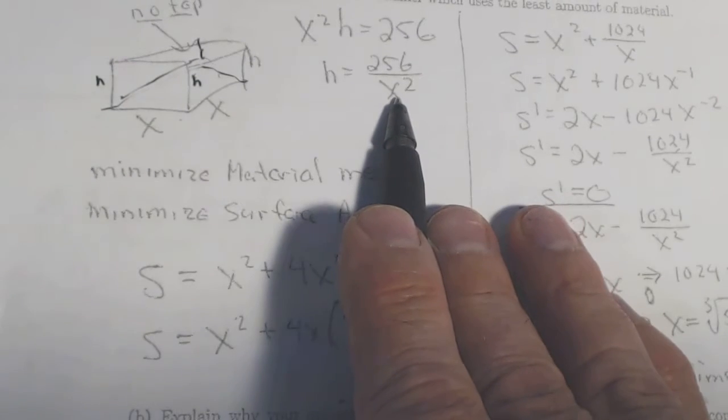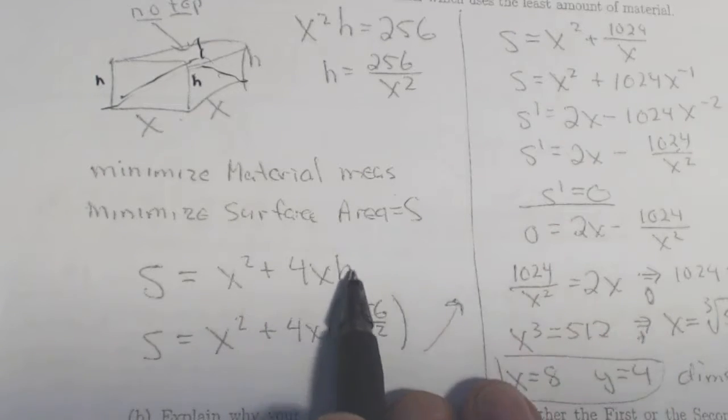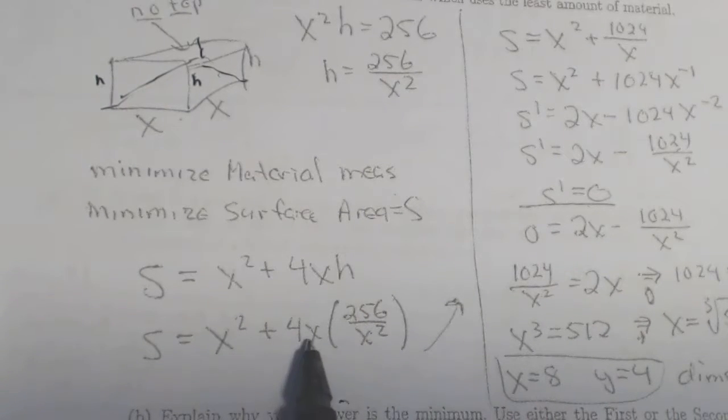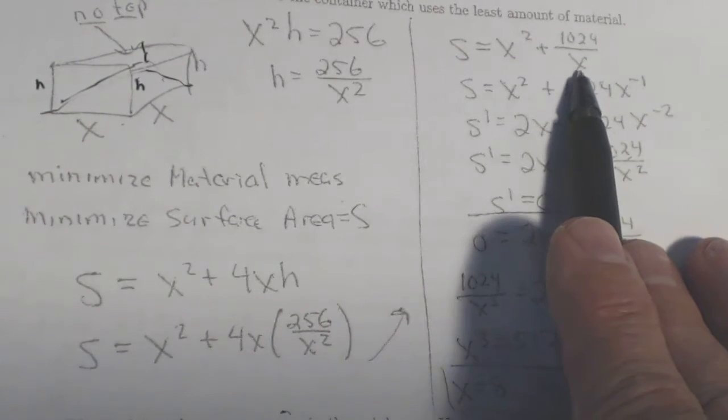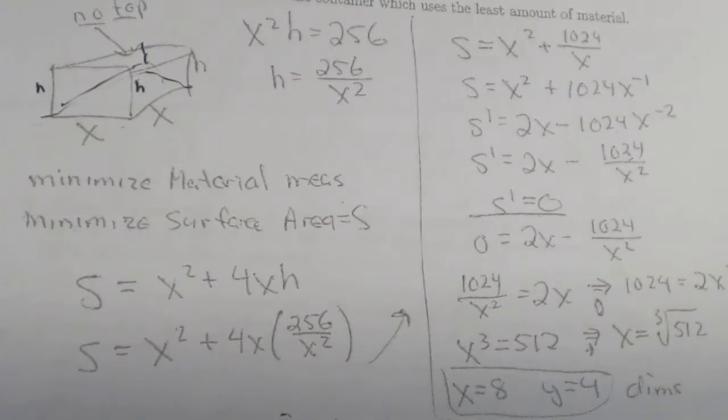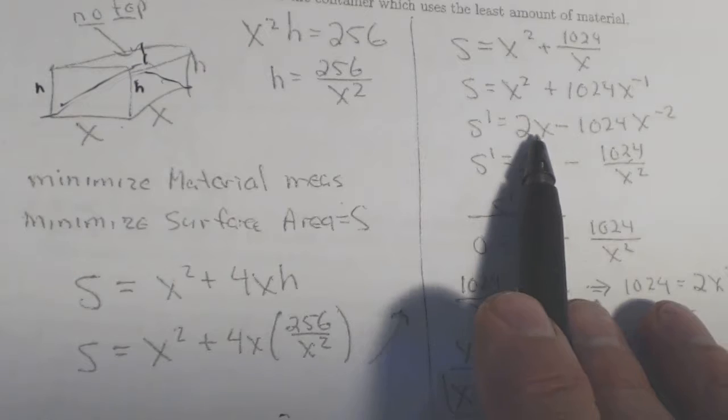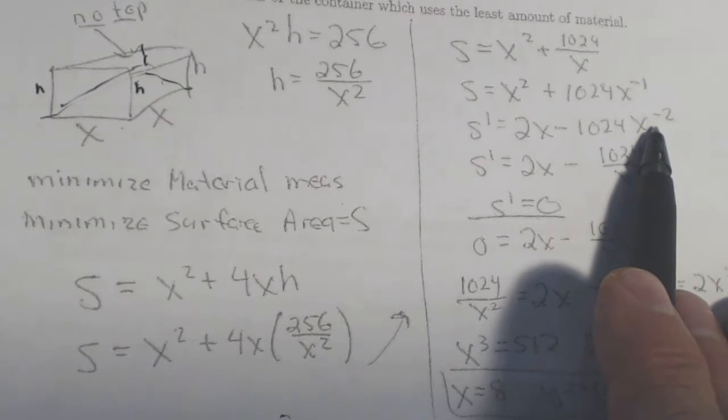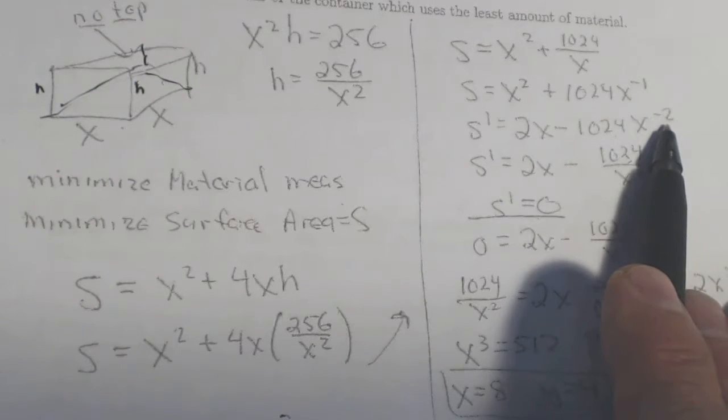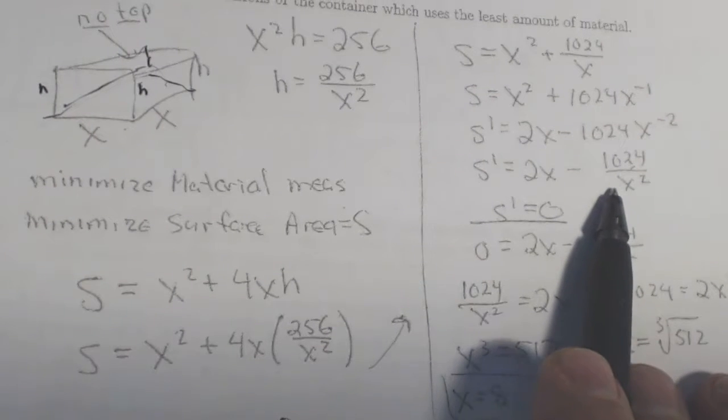Now, what you want to do – we've already solved this for h up here. Take that value and replace the h you have here to turn this into a single variable in this equation. Once you have that, do not take your derivative right now. Simplify first. It makes the problem so much easier. Okay. This simplifies to this expression, which I can bring the x up as a negative 1, and this is a really easy derivative to take. So this is – the derivative, then, is 2x minus 1024x to the negative 2. Okay. Simple power rule. Bring the power up front. Lower the power by 1.